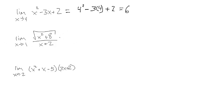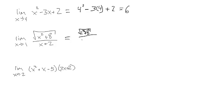The next example is the limit as x approaches 1 of the square root of (x² + 8) divided by (x + 2). We direct substitute into the numerator and the denominator, giving us the square root of (1 squared + 8) divided by (1 + 2).